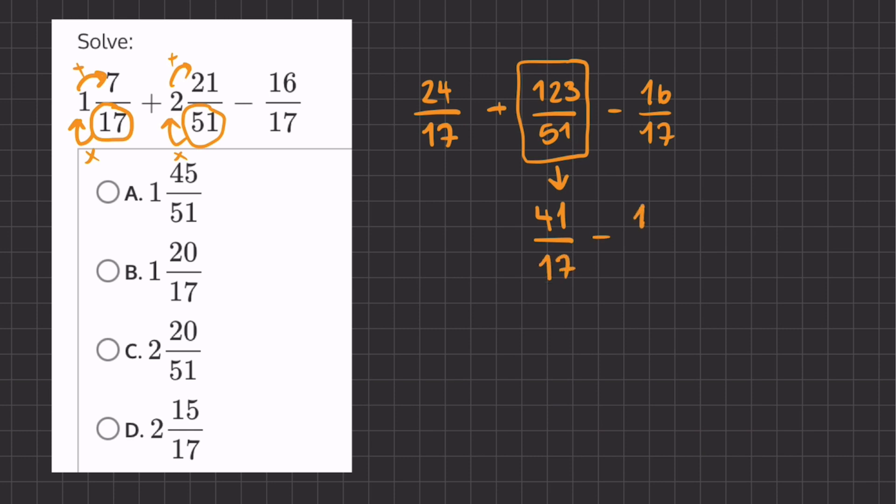Now we can subtract and add the rest of our fractions. So 24 plus 41 is going to give us 65 over 17. And if we subtract 16 over 17 from this fraction, we get 49 over 17.